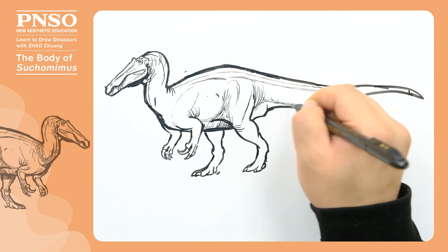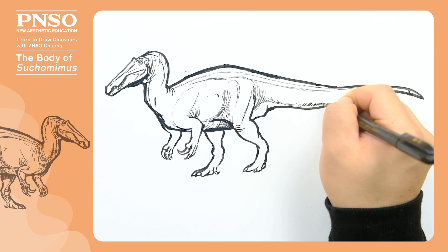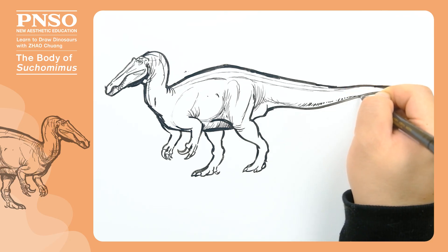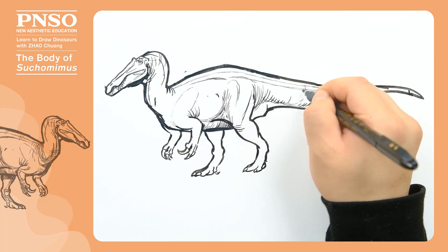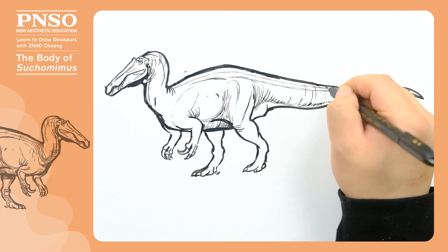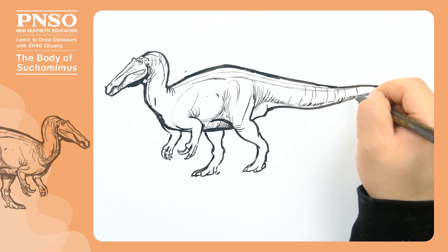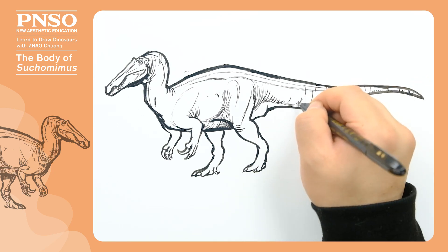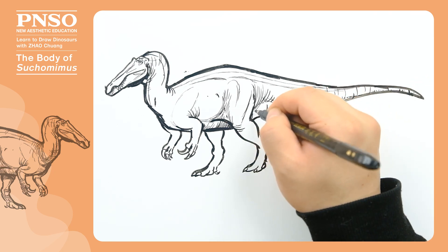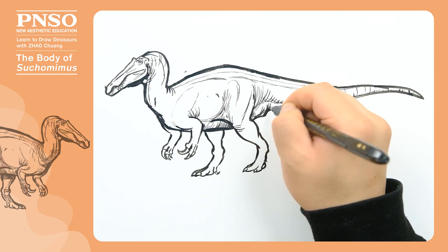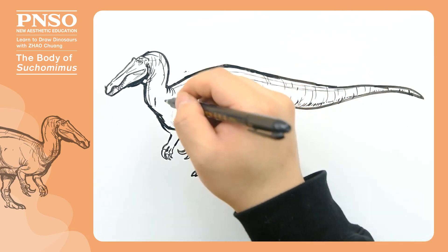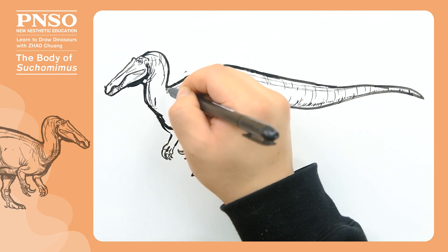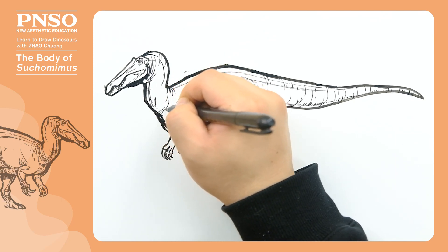On the bottom of its tail, we can draw some folds. At the base of its neck, we can draw many wrinkles.